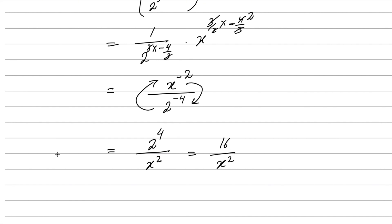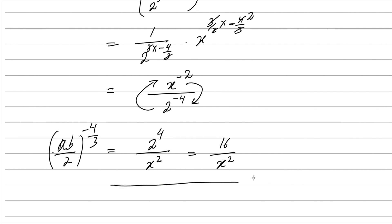So that is the answer for the last part: (ab/2)^(−4/3) = 16/x². Last part is done, and question number 2 is done. If you have any questions, write in the comment box. Thank you.